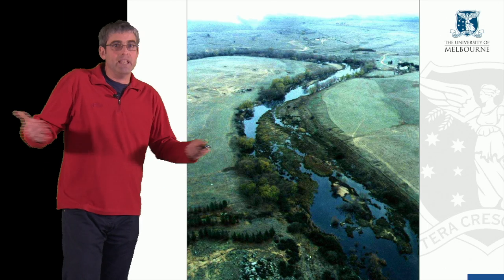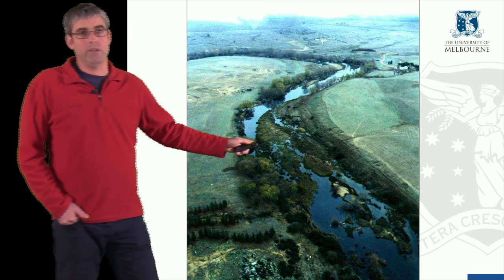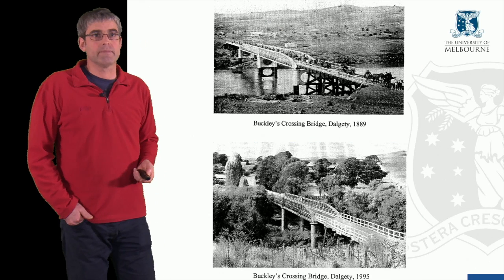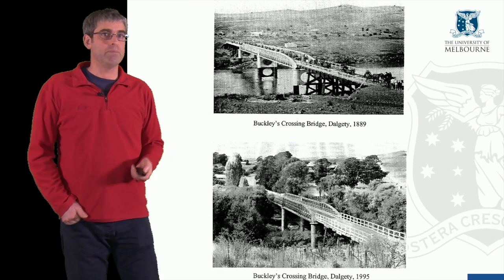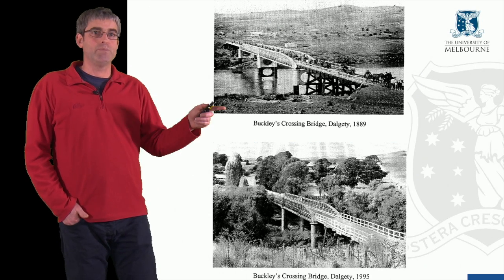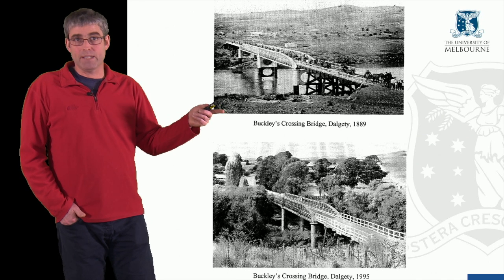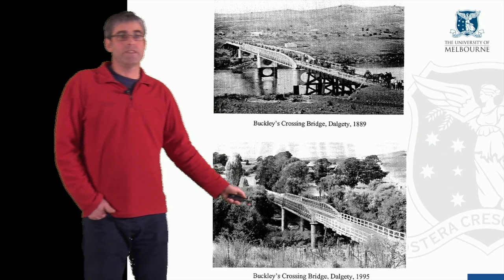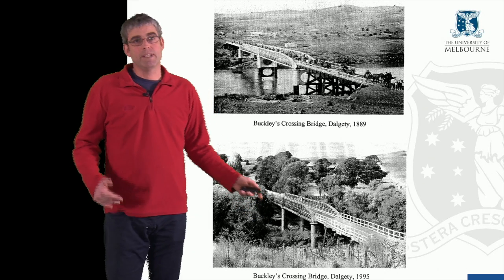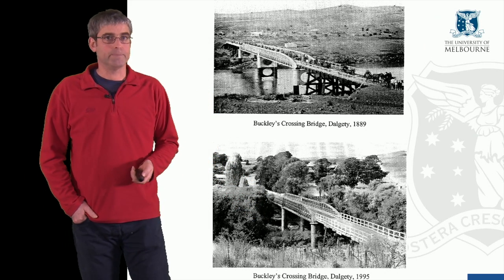And again, in photographs we see this deposition occurring along the channel, with sediment deposits becoming vegetated. There is a bridge nearby — one photo shows the bridge in 1889, before the Snowy Mountain Scheme was constructed, and the same site in 1995 shows clear contraction of the channel and establishment of vegetation within the channel.